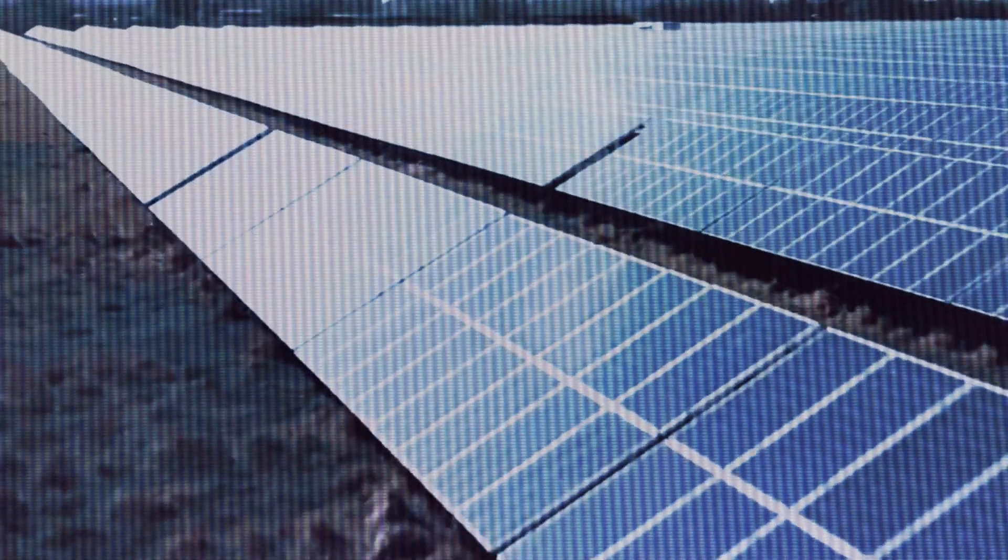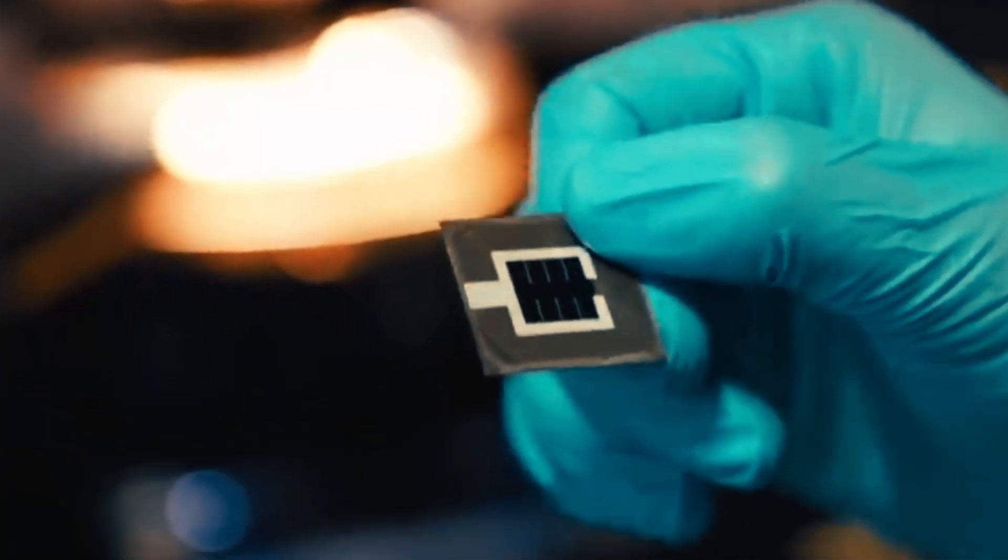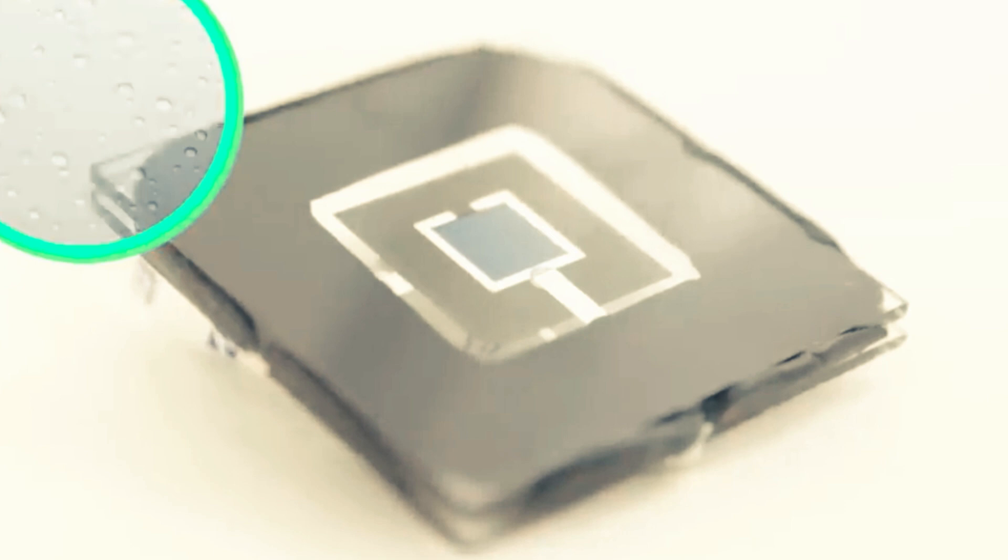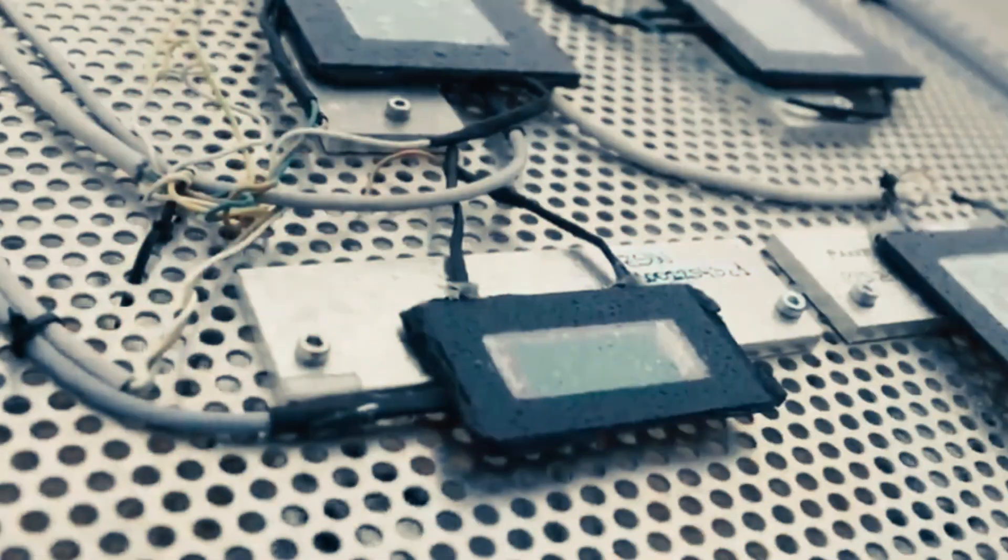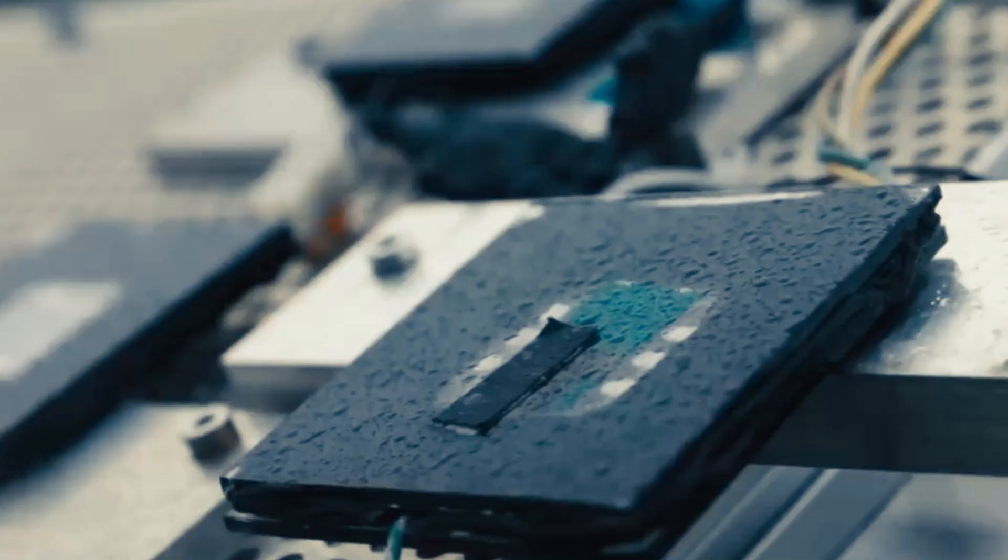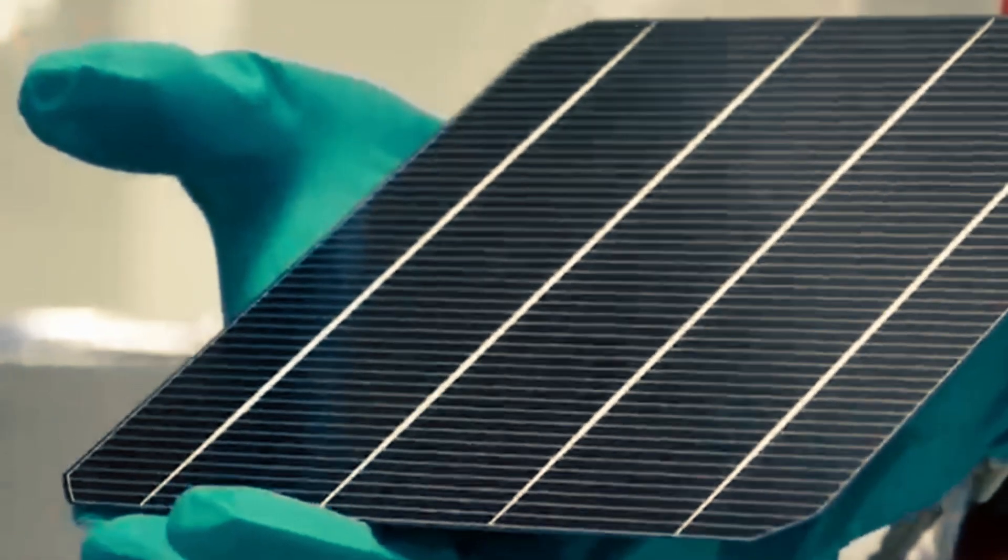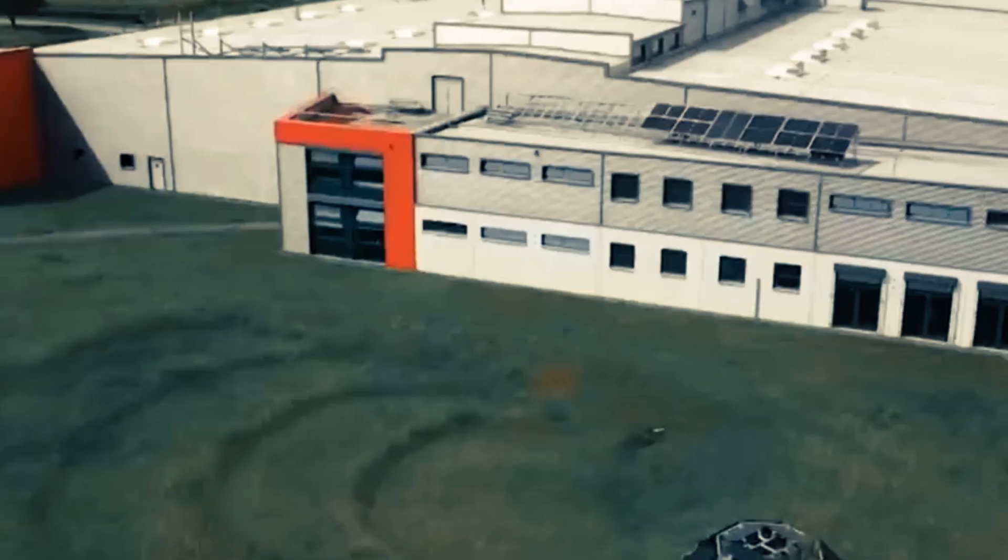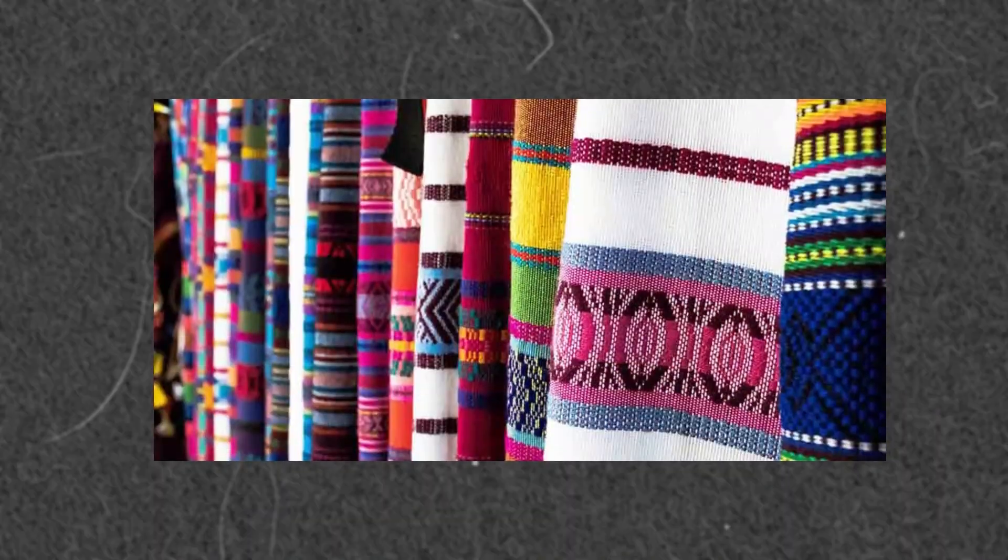Perovskite solar cells have a unique advantage. They are lightweight and flexible, making them perfect for situations where traditional rigid solar panels will just not cut it. These perovskite materials can be deposited on a range of substrates, such as flexible plastics, glass, or textiles, due to their thin-film nature.